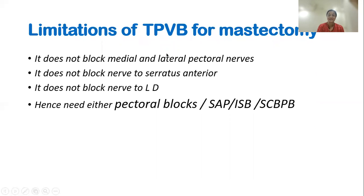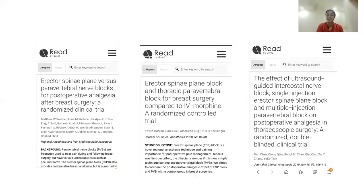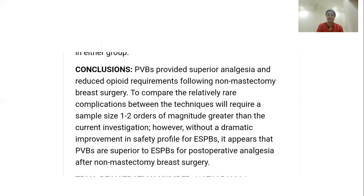Limitations of the paravertebral block for mastectomy: it does not block the medial and lateral pectoral nerves — the anterior nerve and the nerve to latissimus dorsi — so you need a pec block or serratus anterior plane block, or block them higher up in the brachial plexus using interscalene or supraclavicular nerve block. Erector spinae plane block is the poor man's paravertebral block — it is a fascial plane block, simpler and safer, avoiding advancement toward the pleura, and gives good somatic as well as visceral analgesia. Catheter insertion is also possible. Many studies have compared the two and concluded that the paravertebral block provides superior analgesia to the erector spinae plane block. Thank you.